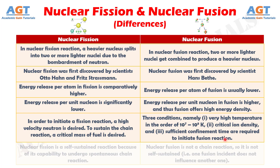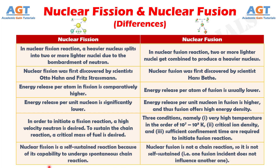Number six: nuclear fission is a self-sustained reaction because of its capability to undergo spontaneous chain reaction. Whereas nuclear fusion is not a chain reaction, so it is not self-sustained — that is, one fusion incident does not influence another one.